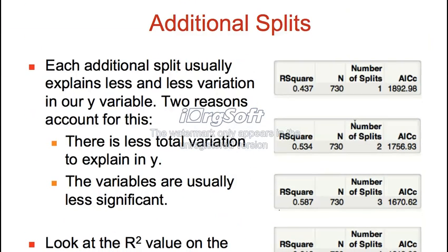Going down here, we can see what happens as we do additional splits. This is your first, second, third, and so on split. As you do more and more splits, there is generally less variation to explain. At first we could have explained up to 100% of the variation. After the first split we've explained 43.7%; the second split gives us 53.4%. So there's less and less additional variation to explain, meaning later splits are less significant. Take note of this page here.